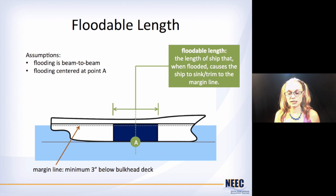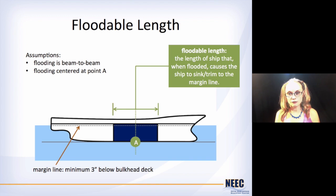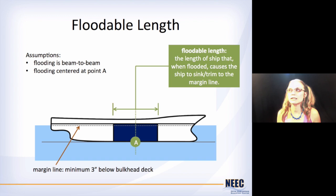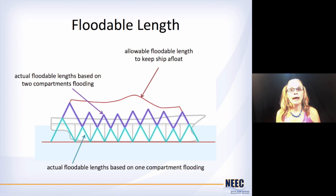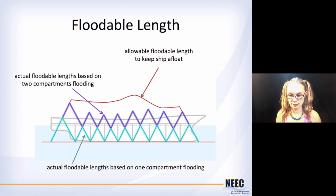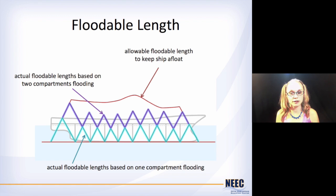Along with this concept is floodable length, which is an older way of looking at whether or not a ship is going to be able to survive a given sort of damage. You go somewhere along the length of the ship and figure out how much on either side of that point the ship can flood and still be basically upright, safe, and stable so that you can get people off. You do that all along the ship and you get this red line — that's the allowable floodable length for your ship. The actual floodable length depends on where you put your bulkheads. Once you put your bulkheads in and get your subdivision set, you need to go back and check that the actual floodable lengths are underneath the allowable floodable lengths.